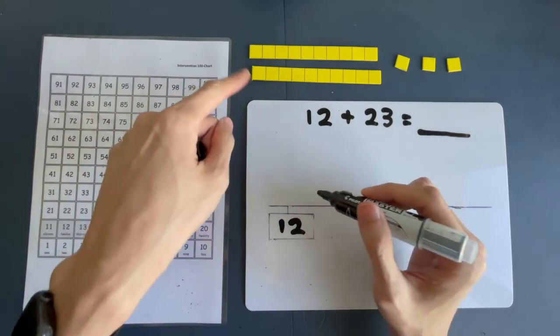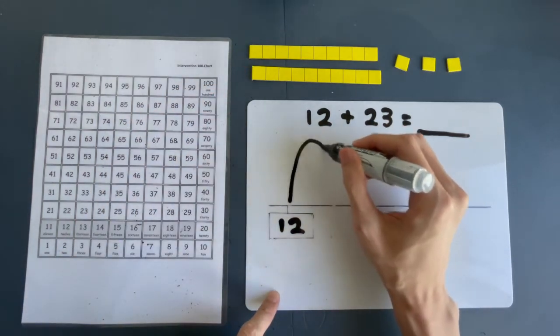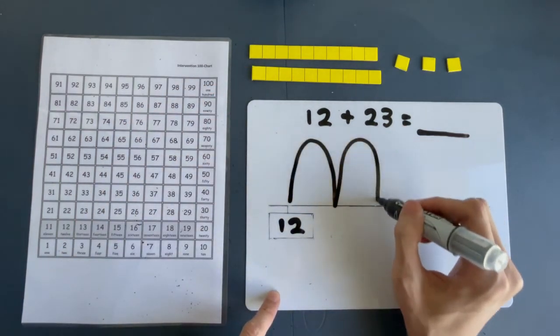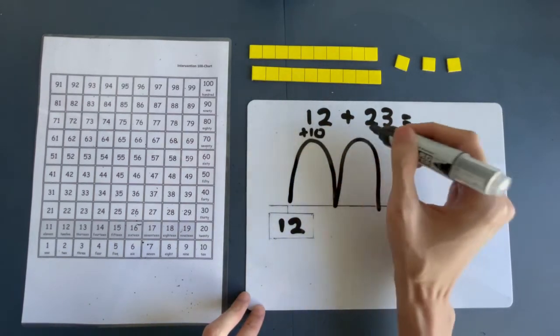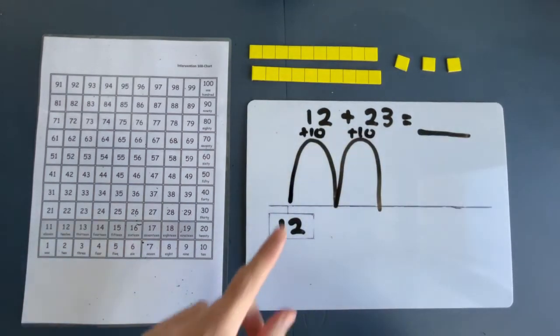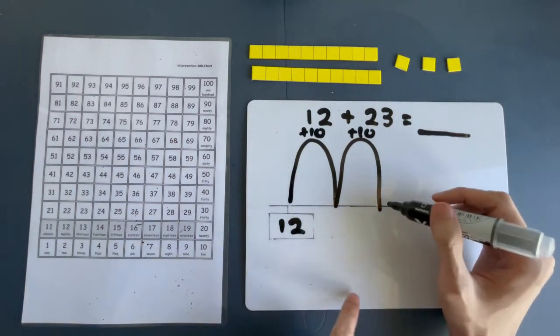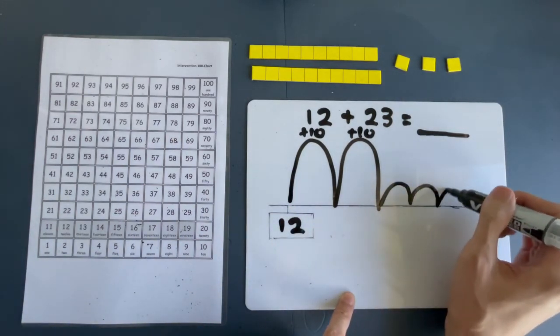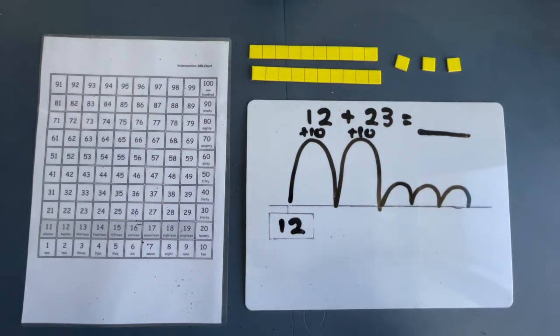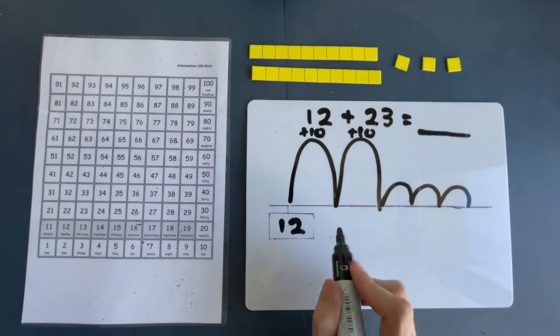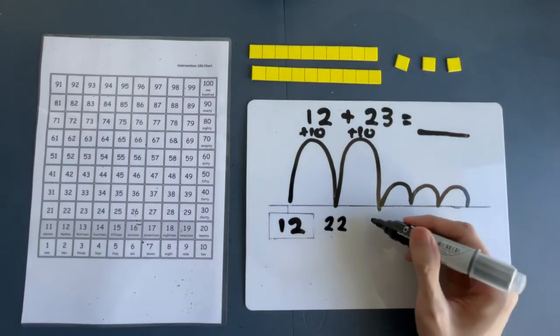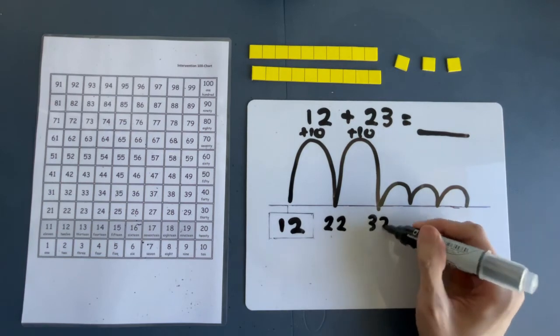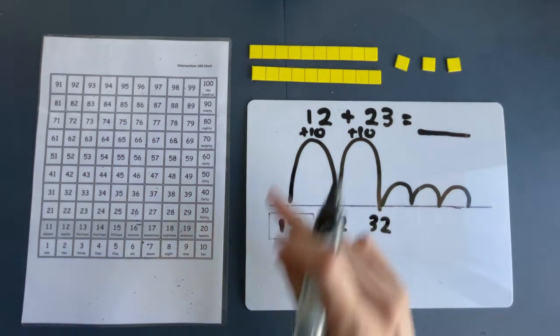So, we are going to make 2 big jumps and 3 small jumps. How does that look like? Let's start. 2 big jumps first. 1, 2. 2 big jumps. That is counting in 10s. And 3 small jumps. 1, 2, 3.